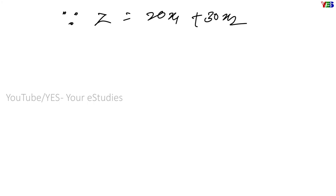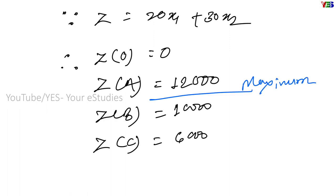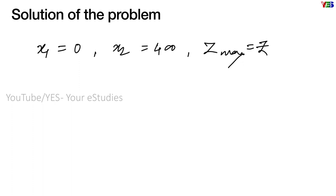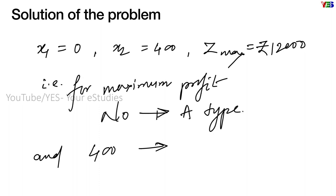Since the objective function is Z equal to 20x1 plus 30x2, we find the values of Z at each vertex by substituting the coordinates. We get: Z at O equals zero, Z at A equals 12,000, Z at B equals 10,000, and Z at C equals 6,000. Z is maximum at point A, which is 12,000. At point A, x1 equals 0 and x2 equals 400. Therefore, for maximum profit, the firm should manufacture zero units of type A and 400 units of type B per day, yielding a maximum profit of rupees 12,000.